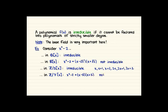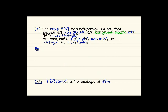It's really important to pay attention to the base field you're working with, because that can affect which polynomials are irreducible and which are reducible. Now we're finally able to define what it means for two polynomials to be congruent modulo another polynomial. We define this the same way as for integers: they're congruent if m divides their difference — so if m(x) divides f(x) minus g(x). We write f congruent to g mod m, or f equals g in F adjoin x mod m.